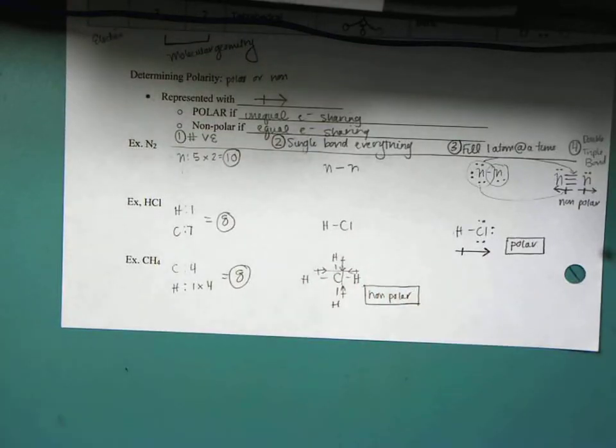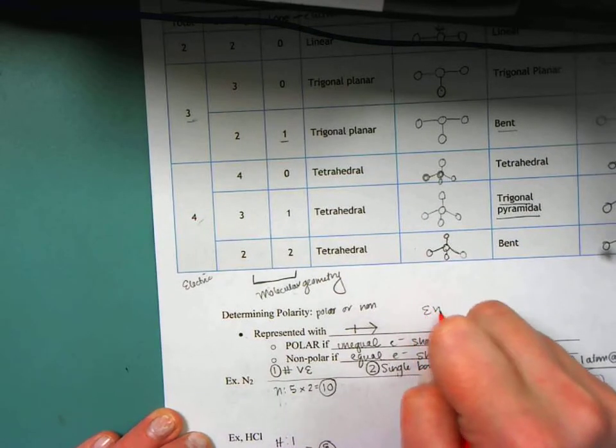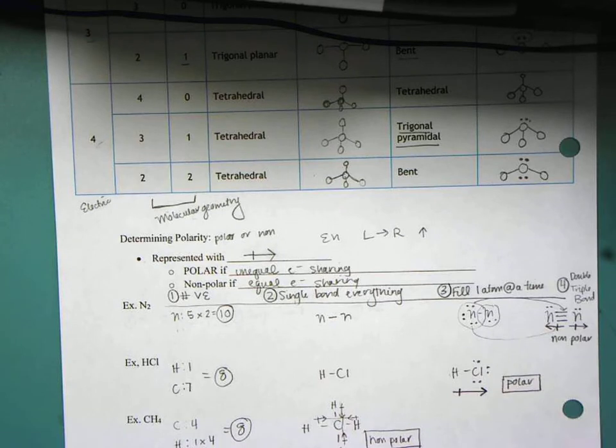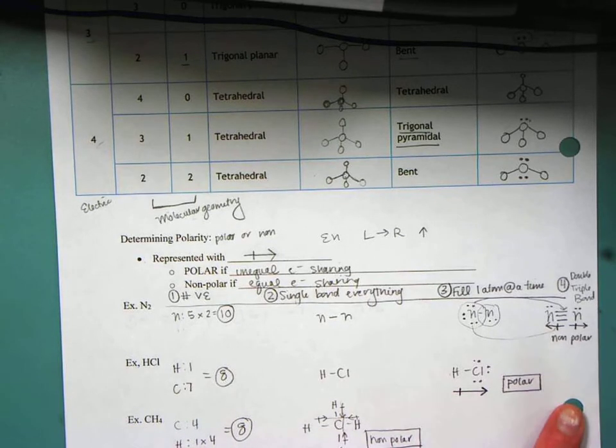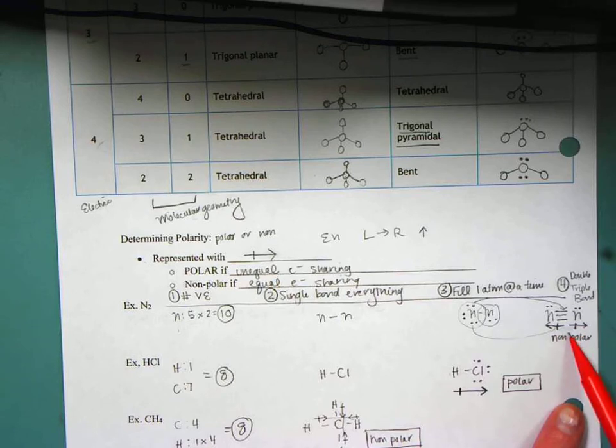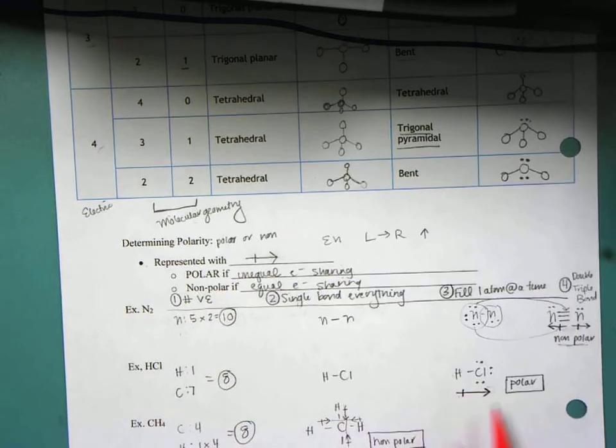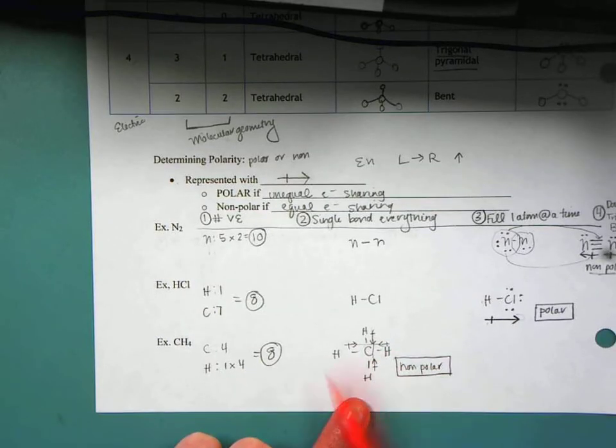So what I did, just as a recap, I used the electronegativity, and I said from left to right, it is increasing, which means my elements on the right are going to be more on the electronegative. I looked at my two nitrogens. They're both pulling them out, but they're doing so in opposite directions. So this is a nonpolar molecule. Hydrogen is to the left of chlorine, so chlorine is more electronegative. My arrow pulls it out, and there's no balance.